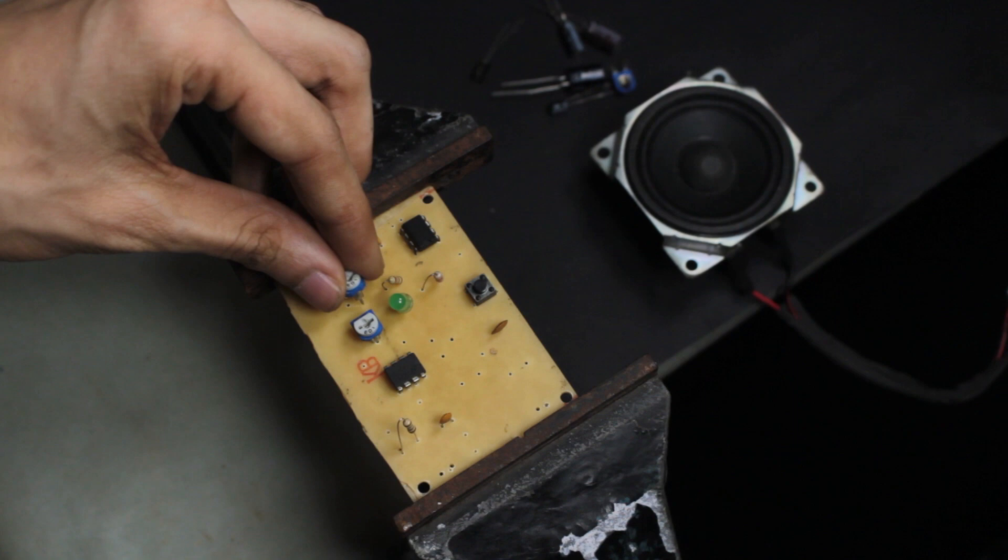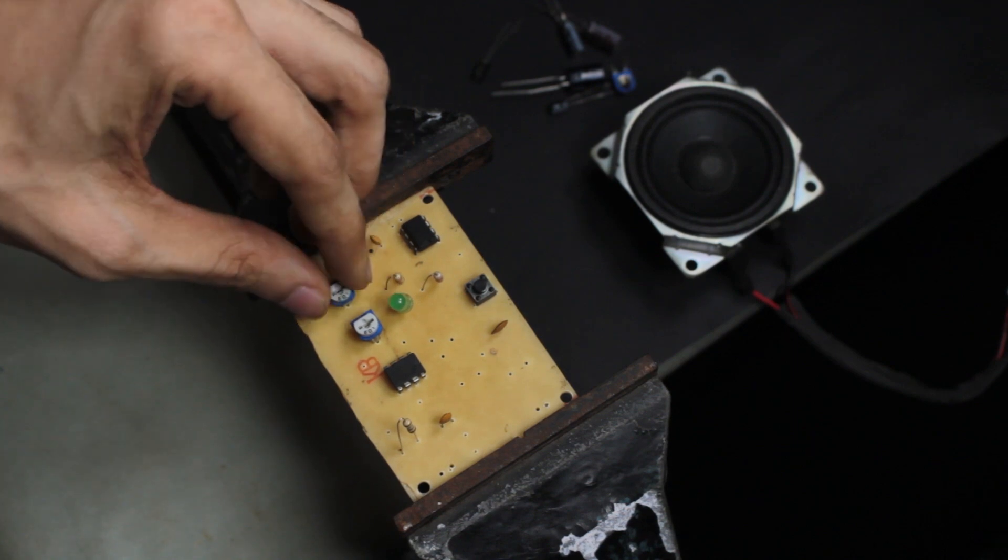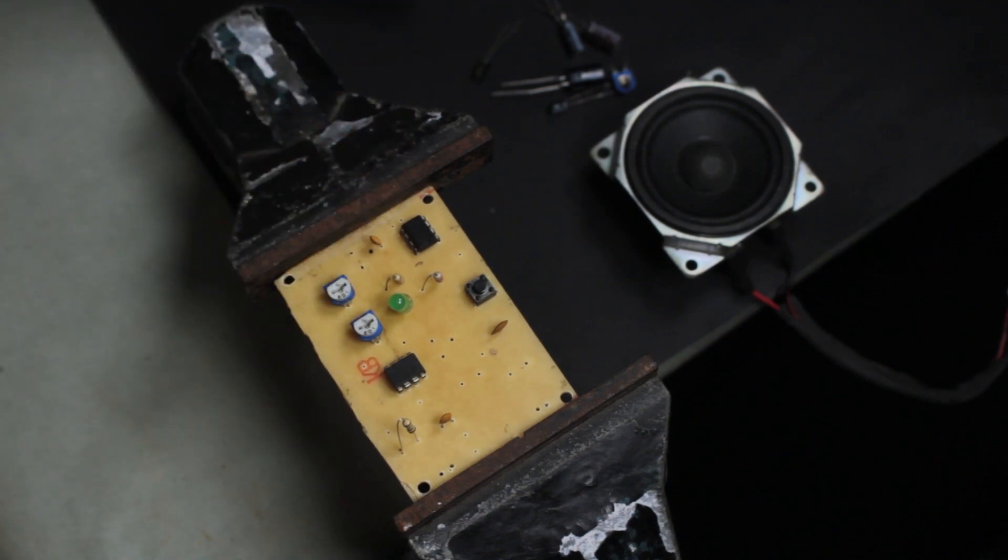The potentiometer R3 is varied in order to change the frequency of the signal generated by the 555.